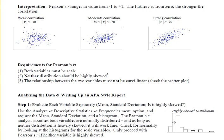So if you see a really strong, highly skewed distribution, just stop. Don't go any further. Instead, you'd have to find another way to report the relationship between the variables.